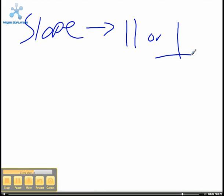And the summary is slope, you can use that to prove that it's perpendicular or parallel. And you can use distance to find the lengths of each side.